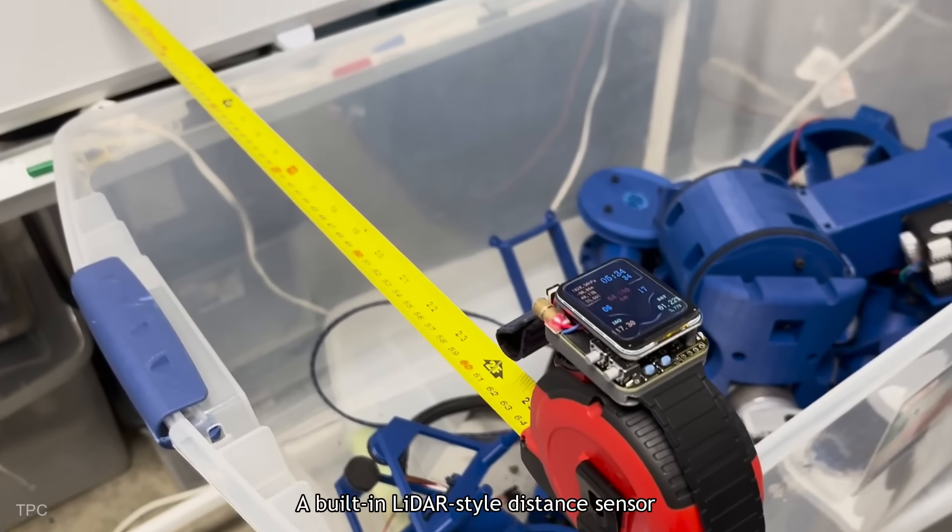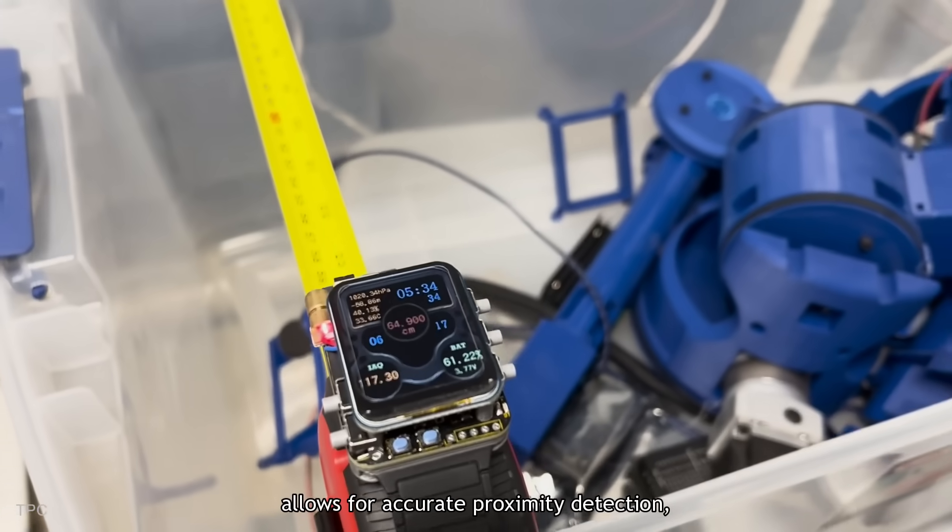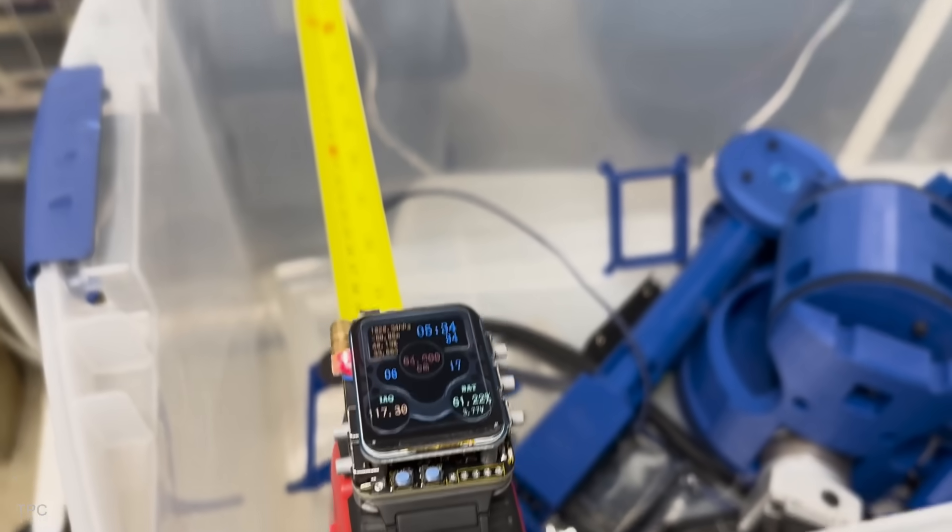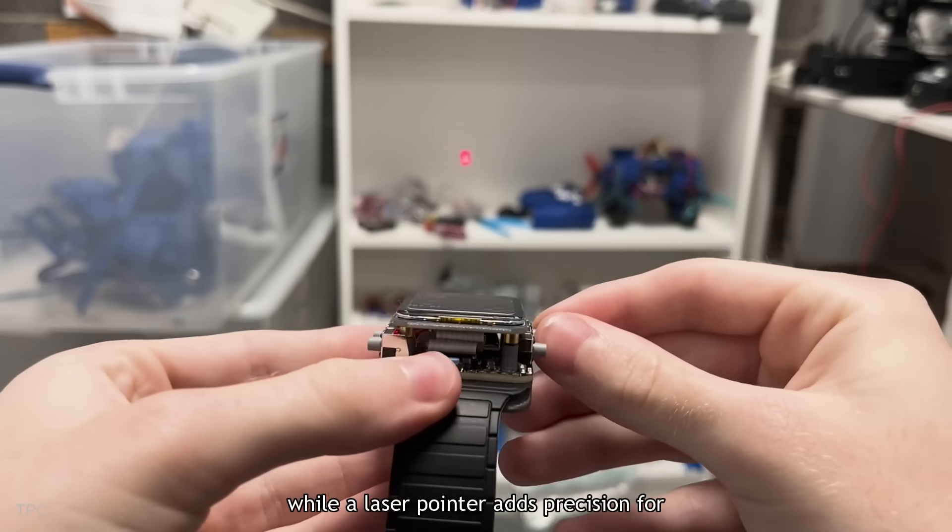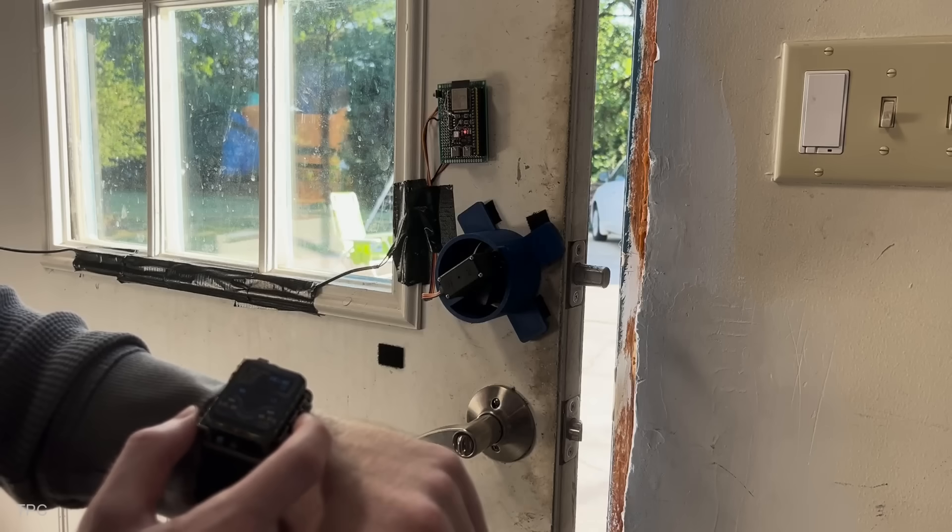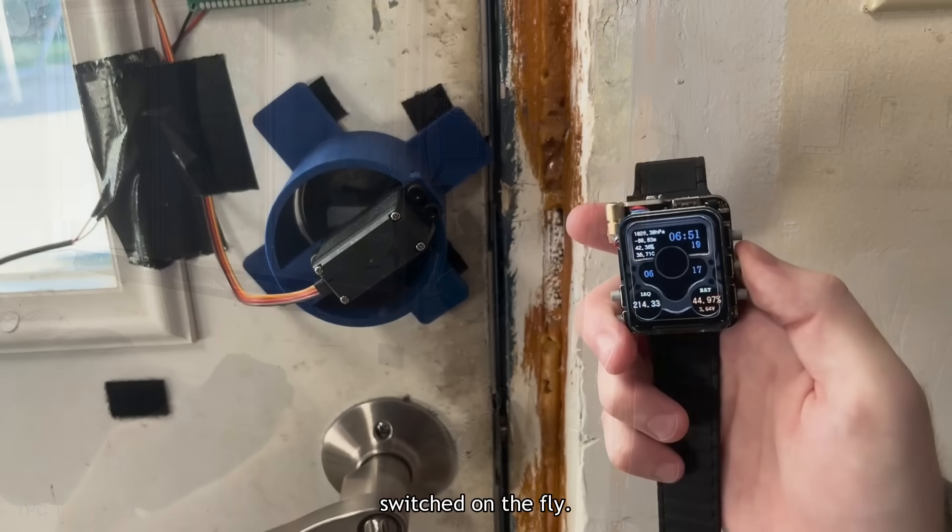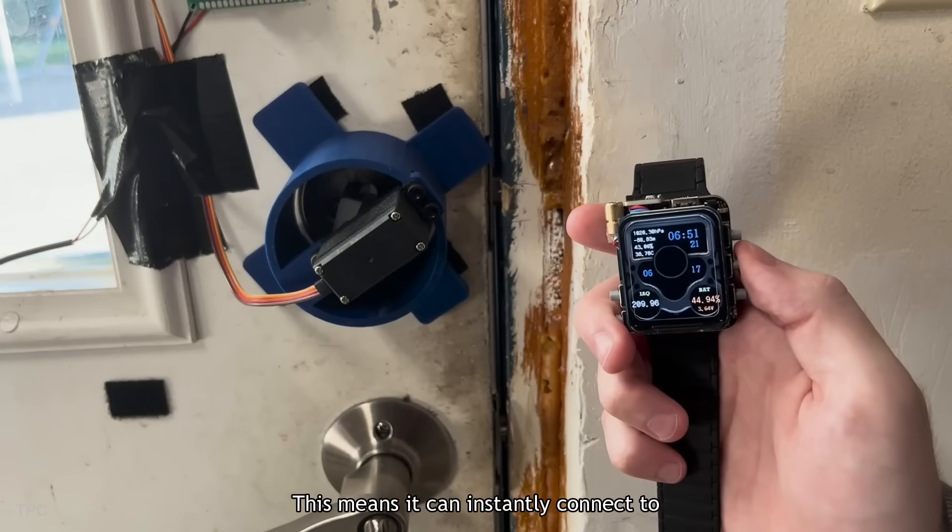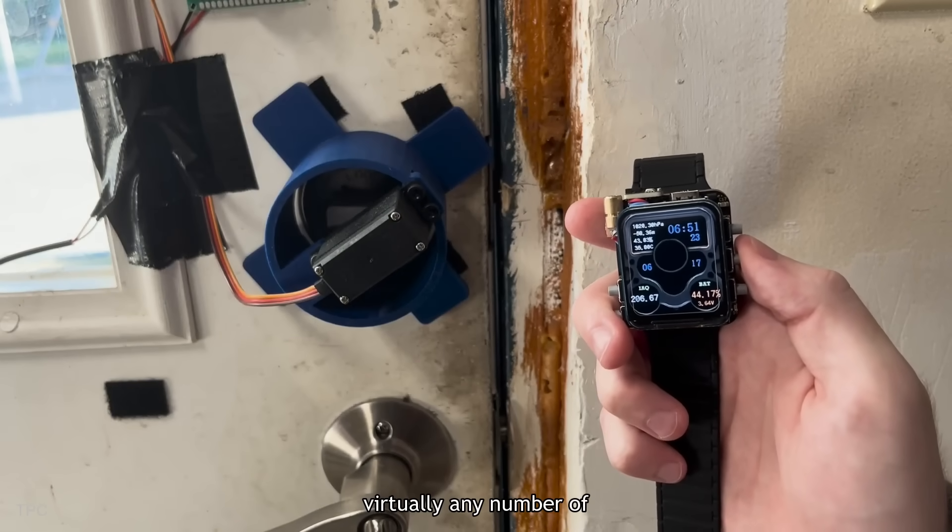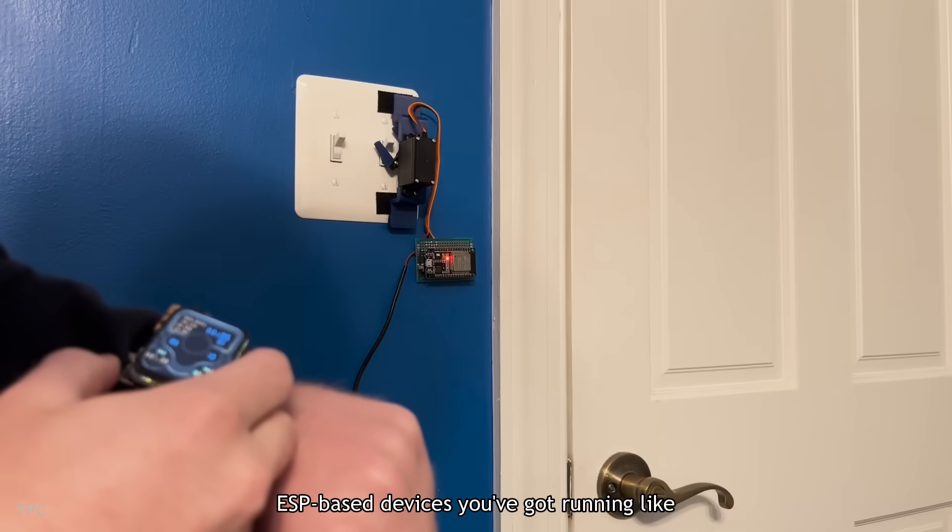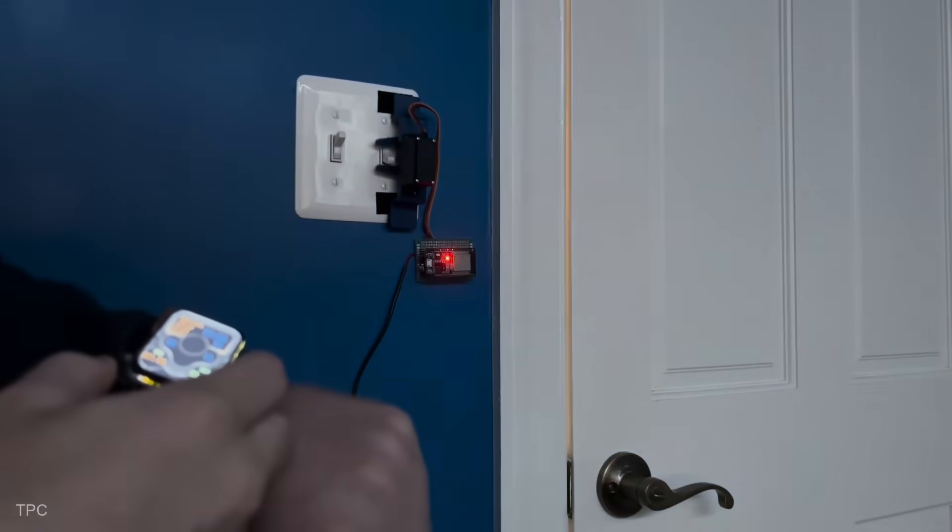A built-in LiDAR-style distance sensor allows for accurate proximity detection, while a laser pointer adds precision for aim-assist tasks. The MAC address of the watch can be switched on the fly. This means it can instantly connect to virtually any number of ESP-based devices you've got running like lights, locks, or sensors.